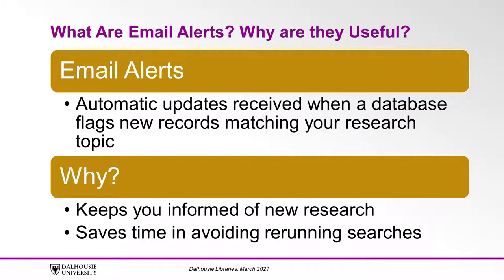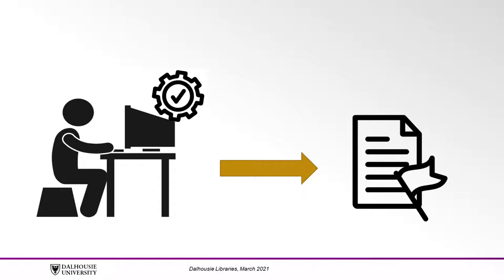First, let's start by discussing what email alerts are and why they are useful. Email alerts are automatic updates that you receive when a database flags new records that match your research topic. These alerts are useful because you don't always have time to visit databases and rerun your searches hoping to locate new content. Instead, you can run your searches once and set up an alert to do the scanning and push out new updates to you. This type of information feed specific to a topic of interest can save you time and help make sure you don't miss out on new literature published in your area.